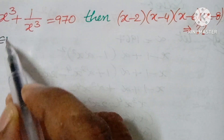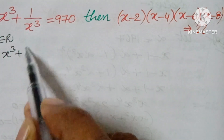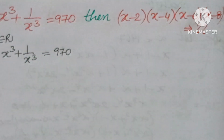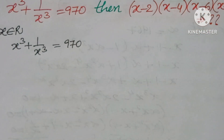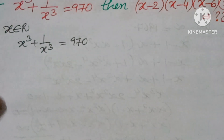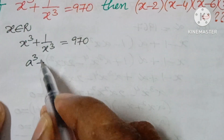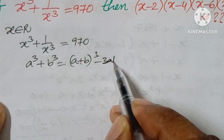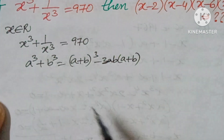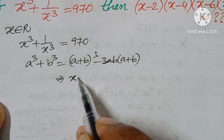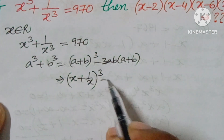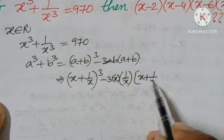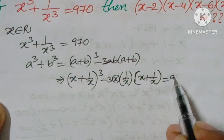First of all, x belongs to real numbers and x³ + 1/x³ = 970. We use the formula a³ + b³ = (a+b)³ − 3ab(a+b), so we can write it as (x + 1/x)³ − 3·x·(1/x)·(x + 1/x) = 970.